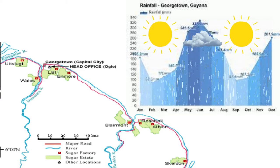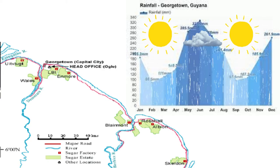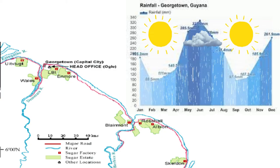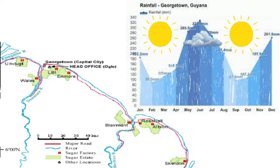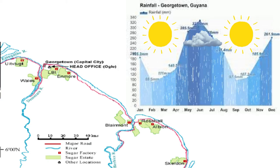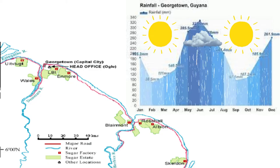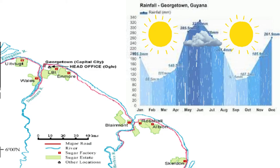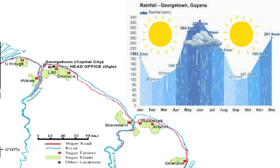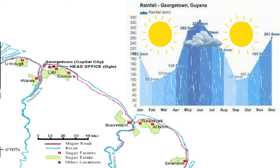However, the country being located along the equator is subjected to the Intertropical Convergence Zone, which brings two periods of very heavy rainfall per year. Average annual rainfall is about 2,000 millimeters, ranging from 1,700 millimeters at Skeldon estate on the extreme east to 2,700 millimeters at Uitvlugt estate on the western limit of the cane growing area.